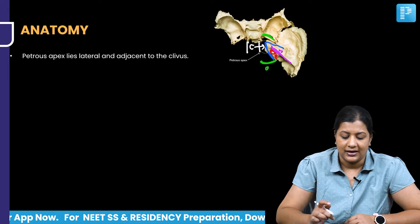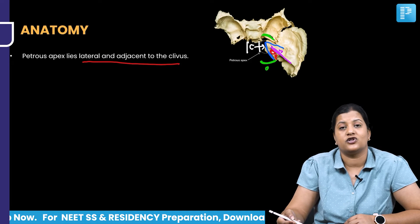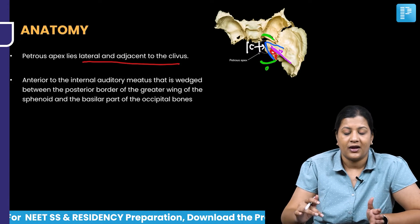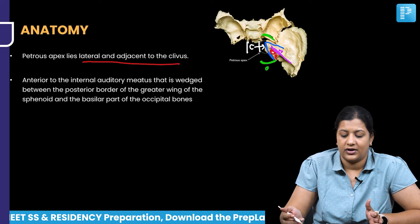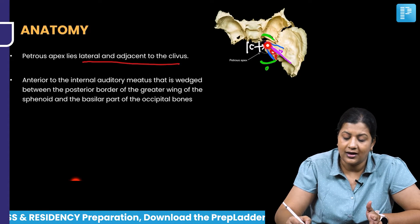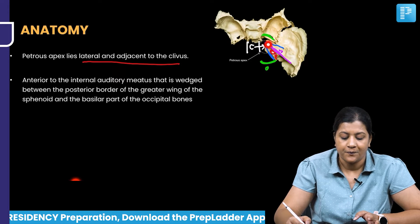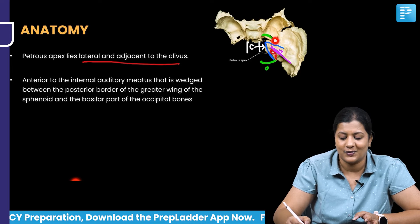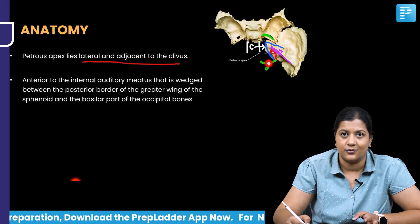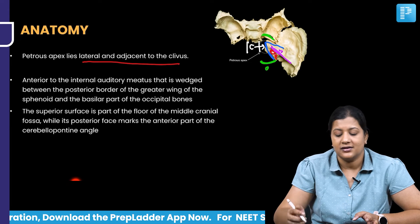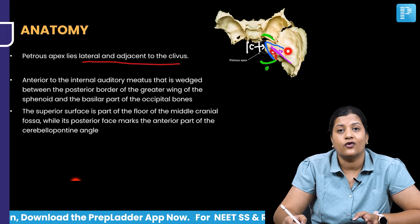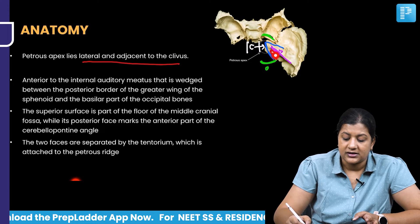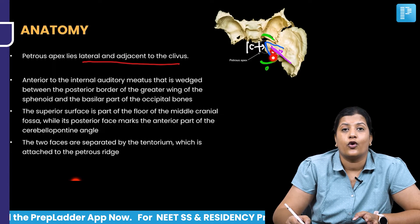The petrous apex lies lateral and adjacent to the clivus, making the clivus its medial boundary. It lies anterior to the internal auditory canal and is wedged between the greater wing of the sphenoid anteriorly and the occipital bone posteriorly. The superior surface forms part of the middle cranial fossa.